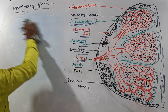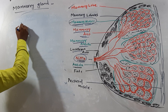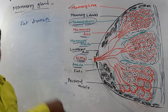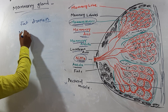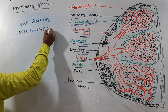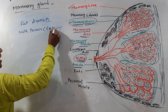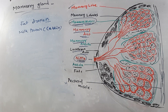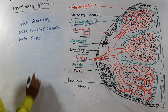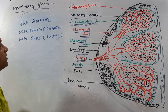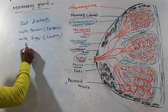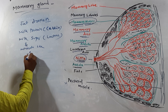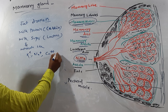Regarding the composition of milk: milk is composed of fat droplets and contains milk protein known as casein. It also contains milk sugar called lactose, and minerals like potassium, sodium, calcium, and phosphorus.